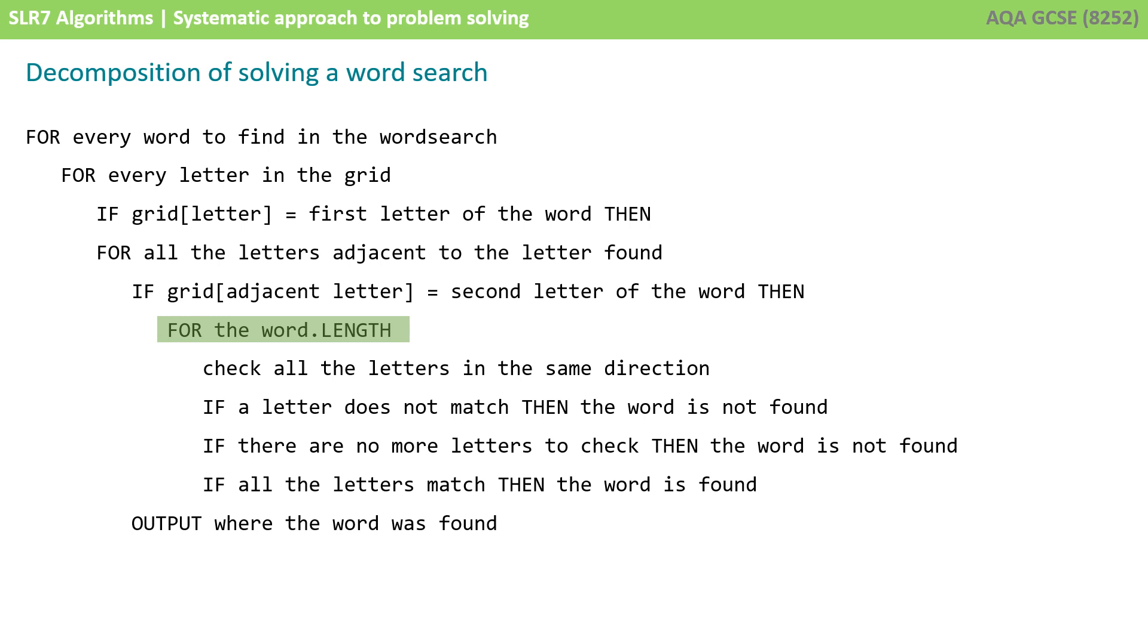And if it is, then for the length of the word, check all the letters in the same direction. If a letter does not match, then the word hasn't been found. If there's no more letters to check because we're outside the bounds of the grid, then the word is not found. If all the letters match, then the word is found. And we could finish by outputting that the word was found.